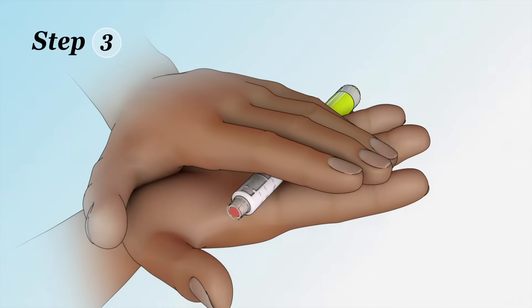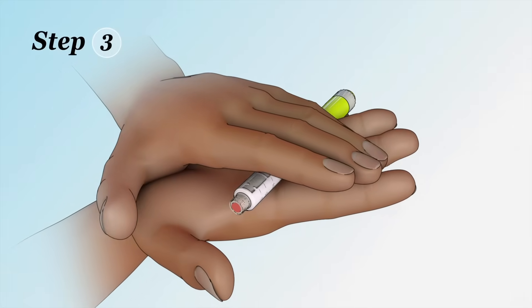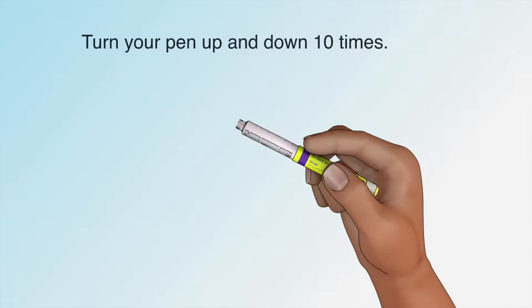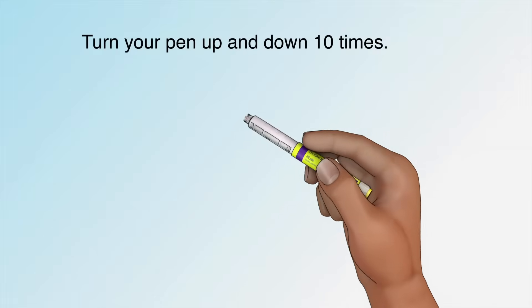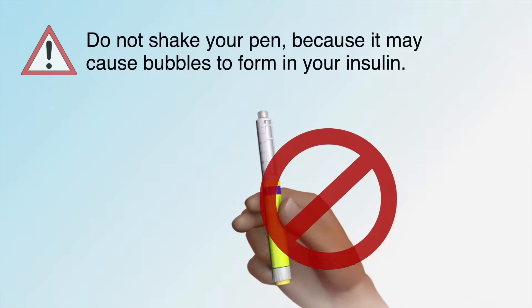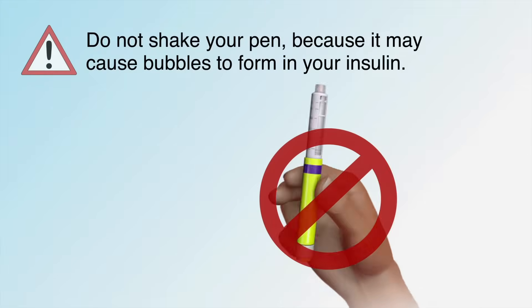Step 3: If your insulin needs to be mixed, gently roll the pen between your hands, then turn your pen up and down 10 times. Do not shake your pen because it may cause bubbles to form in your insulin.